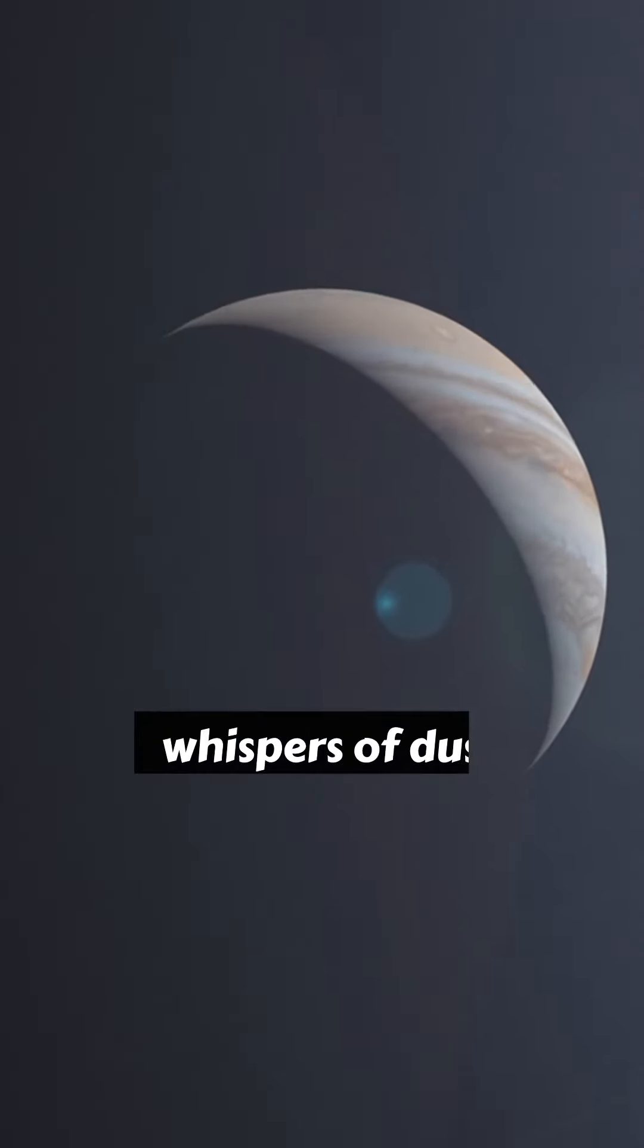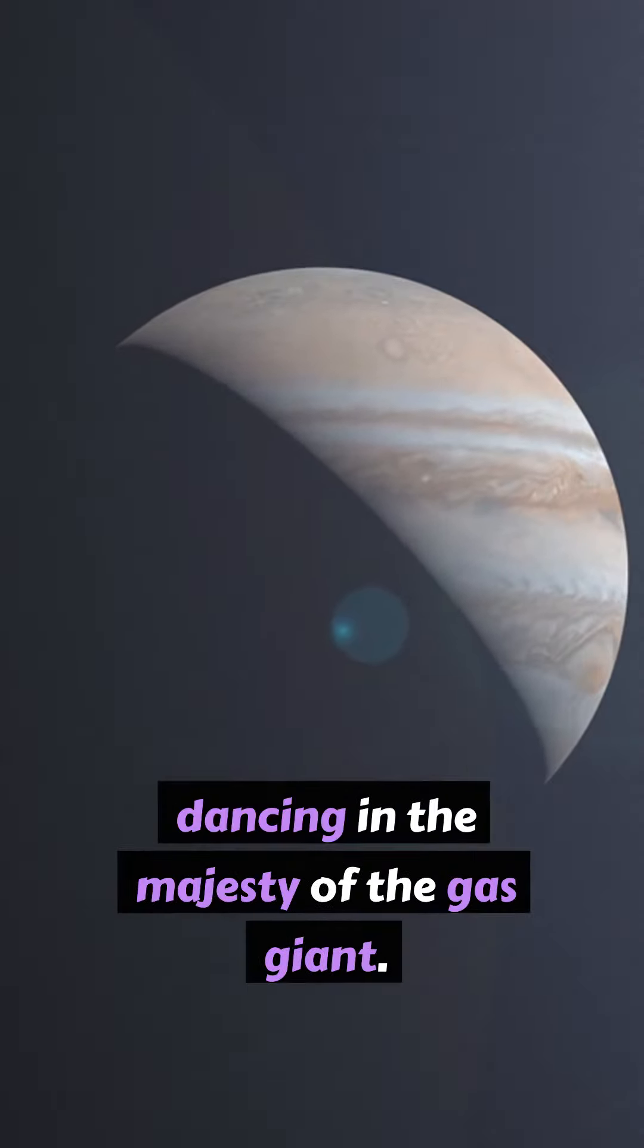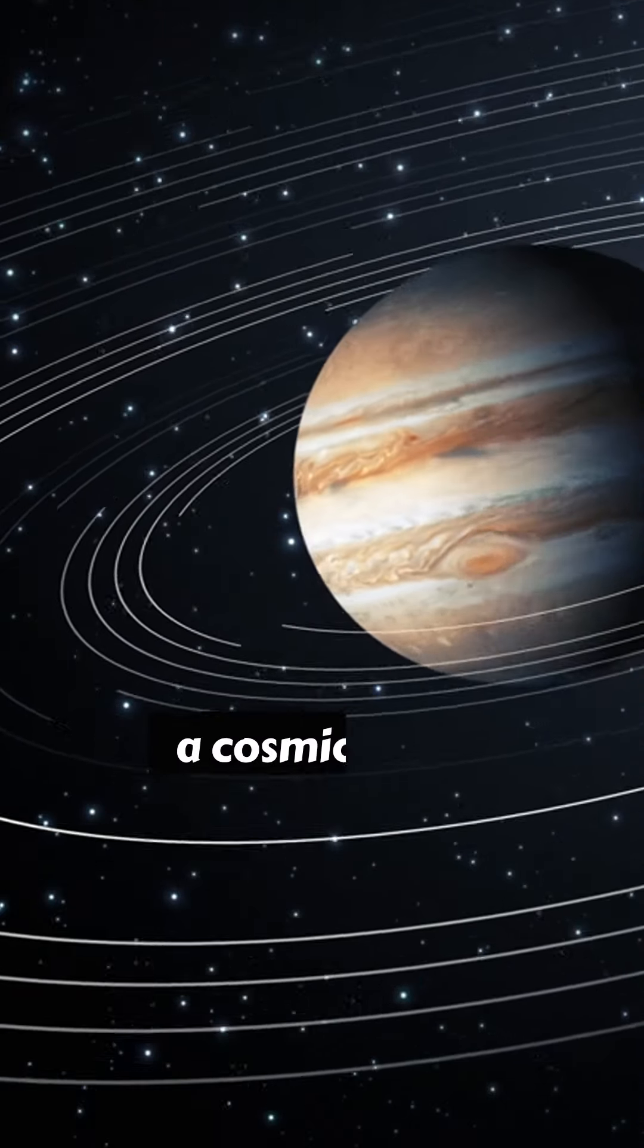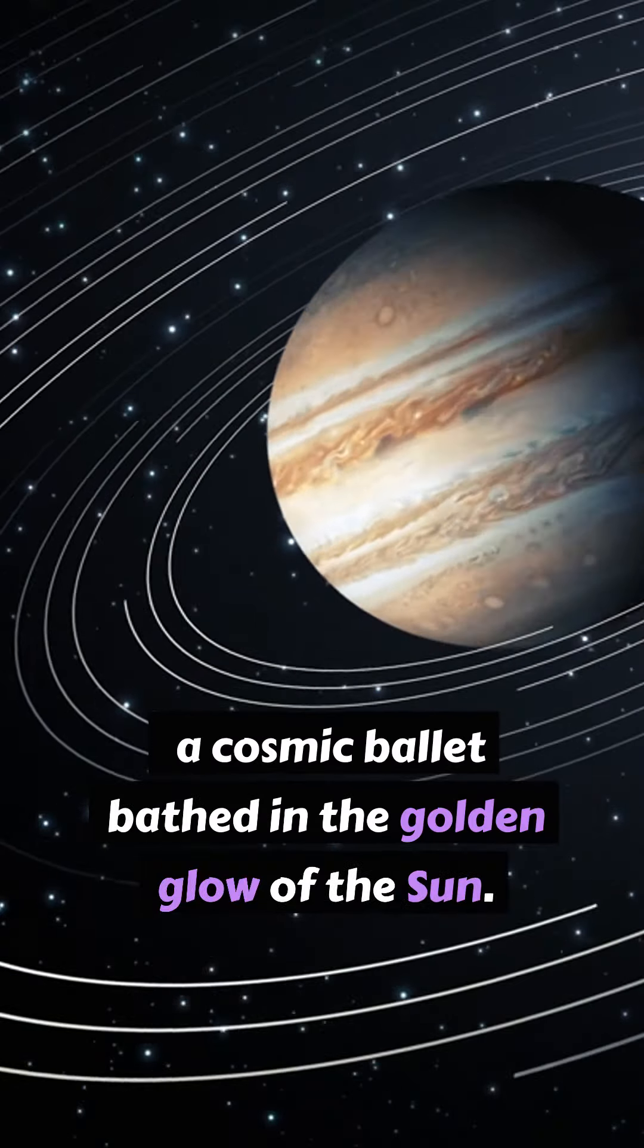Faint rings of Jupiter, whispers of dust dancing in the majesty of the gas giant. Their story is one of silence and starlight, a cosmic ballet bathed in the golden glow of the sun.